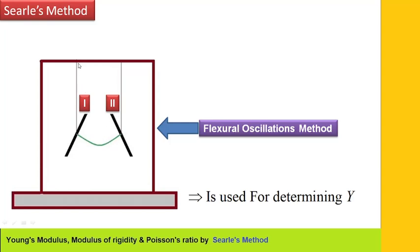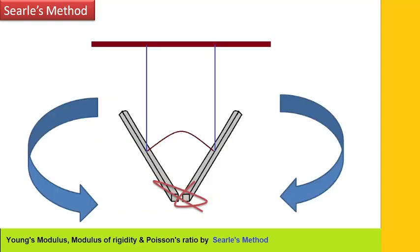Bar 1 is hung with a thread to the fixed support. Bar 2 is also hung to the fixed support with a thread. Both the bars are free to oscillate in free atmosphere. One end of bar 1 and one end of bar 2 are tied together with a thread in this manner.